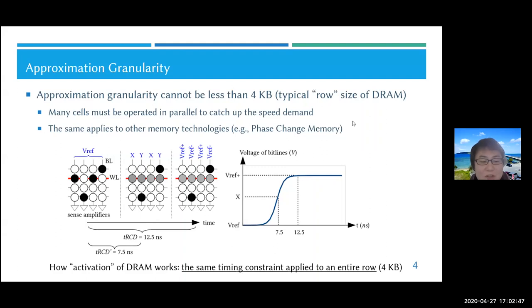This figure shows how an activation command of DRAM works. The circles show memory cells, organized as rows and columns. Black cells have the value of one, white cells have the value of zero. Each row of the memory array is connected through a word line, and each column is connected through a bit line. When you want to read data from this memory, you first select one row and enable the word line corresponding to that row.